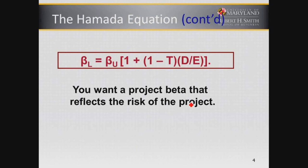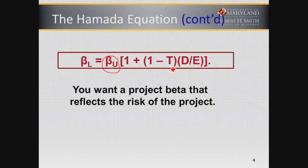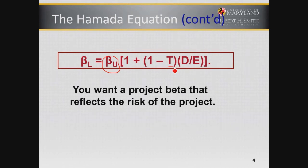The Hamada equation tells us that the levered beta equals the unlevered beta (beta U) multiplied by 1 plus the debt-equity ratio multiplied by (1 minus the tax rate). If there were no taxes, having debt simply makes the firm more risky. But with taxes — something you'll learn when we look at capital structure — debt is slightly beneficial because you can deduct interest expense from revenues to get lower taxable income. Interest expense is tax deductible, which is why we multiply the debt-equity ratio by (1 minus the tax rate). A positive tax rate reduces the impact of leverage on risk.